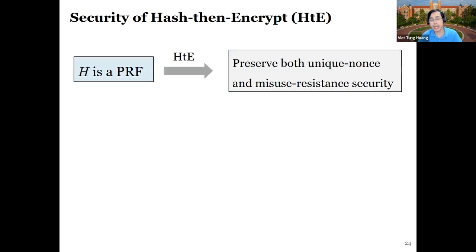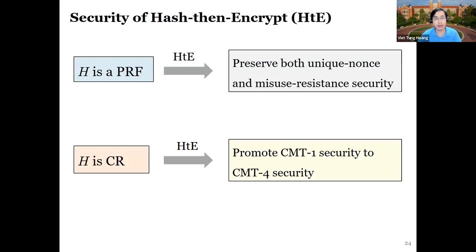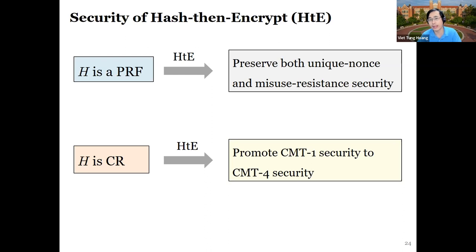Security-wise, if the hash function is a good PRF, the transform preserves both unique-nonce and misuse-resistant security for the AE scheme. And as mentioned, if the hash function is collision resistant, the transform promotes commit-one security to commit-four. So now we have a nice way to obtain commit-four if we know how to get commit-one, and what's left is to see how to get commit-one cleanly.